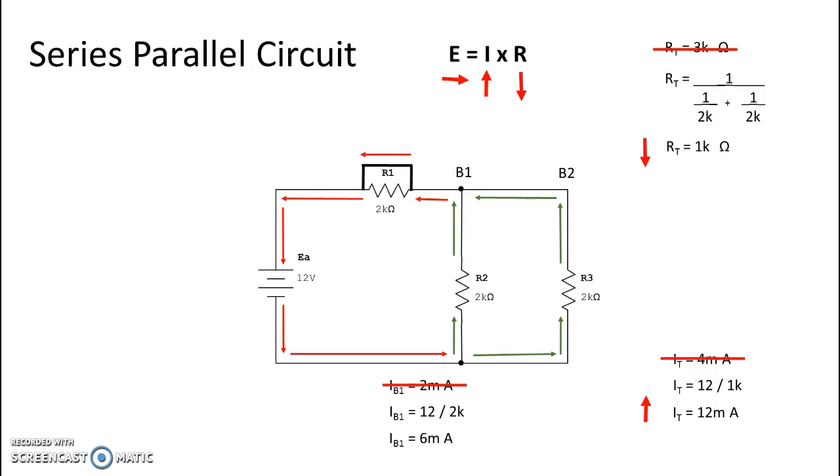Branch 2 is going to be similarly affected. We did have 2 milliamps. Again, we have the same voltage divided by the same resistance, so we end up with another 6 milliamps. This makes perfect sense from our parallel circuits calculations, because we know that the current through branch 1 and branch 2...